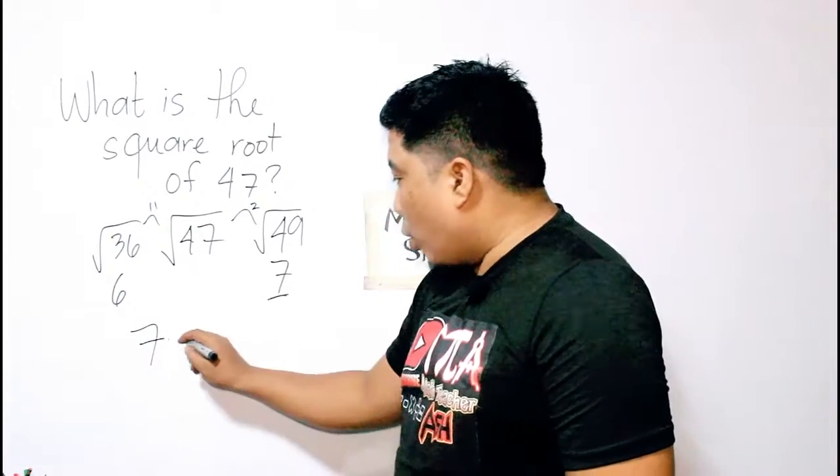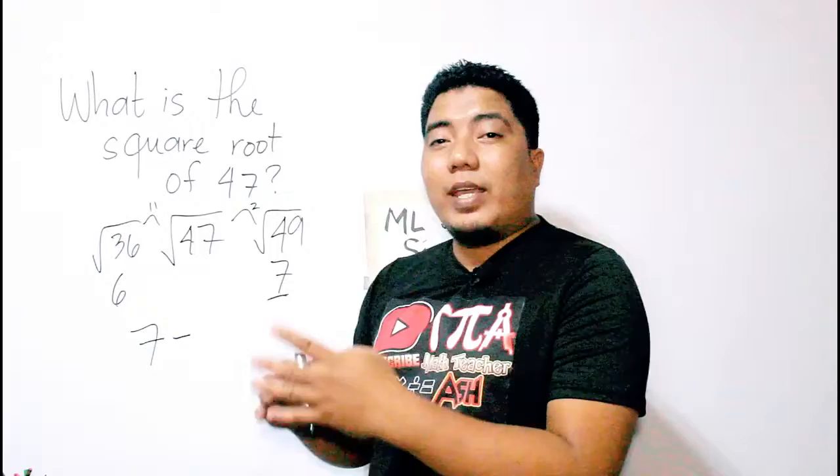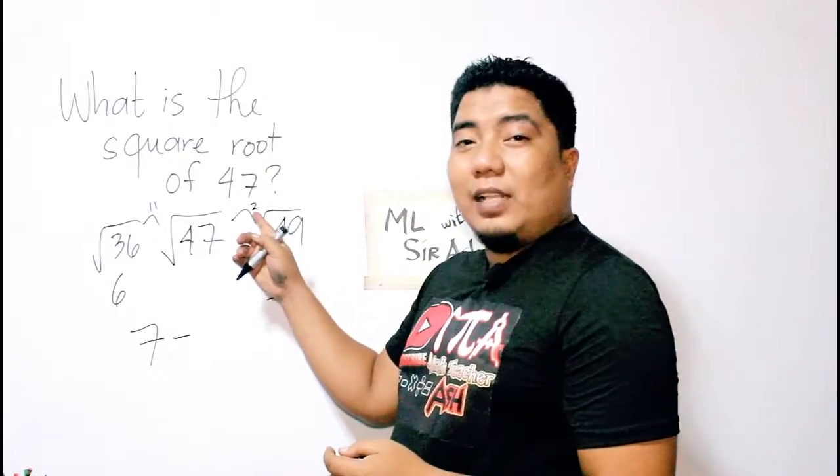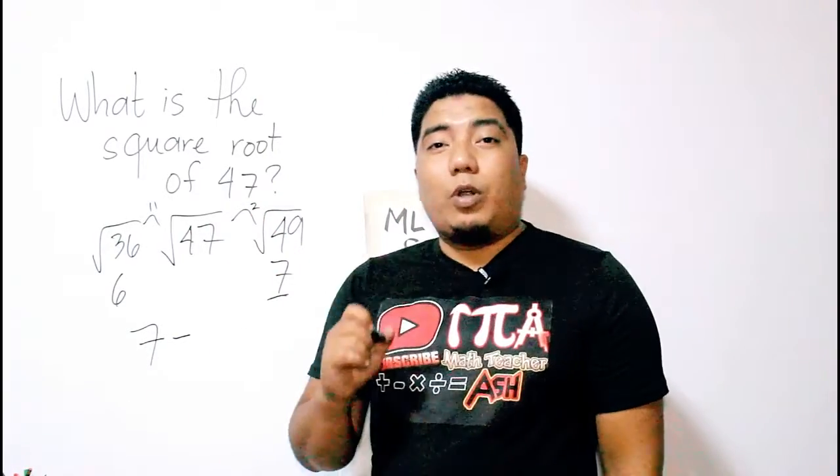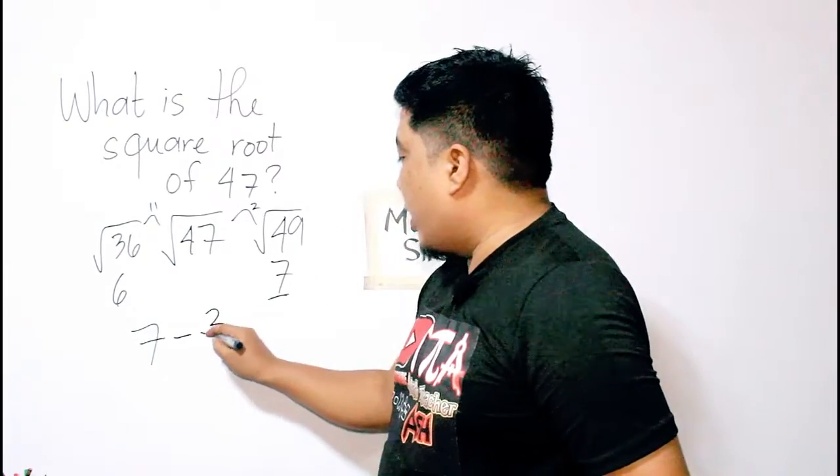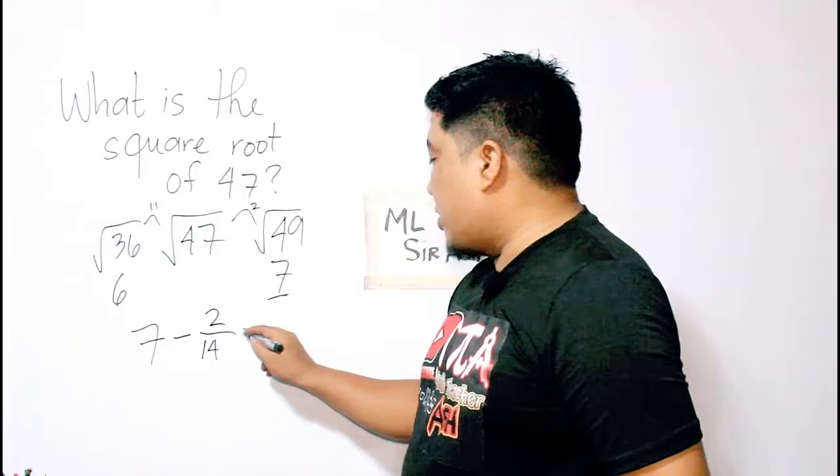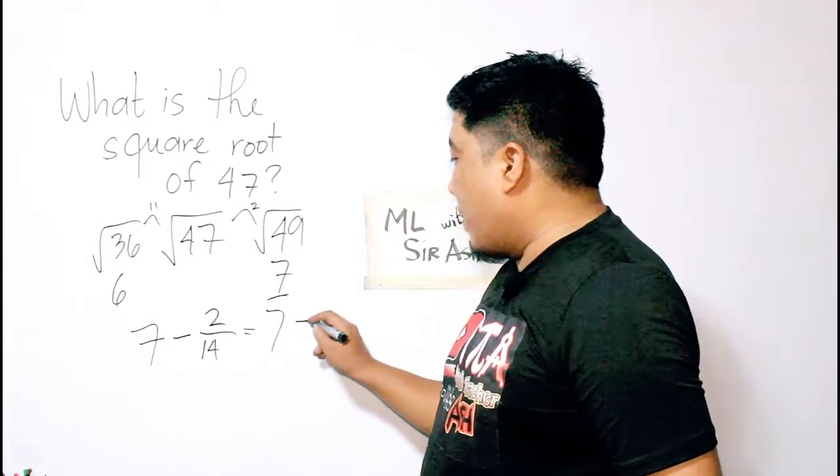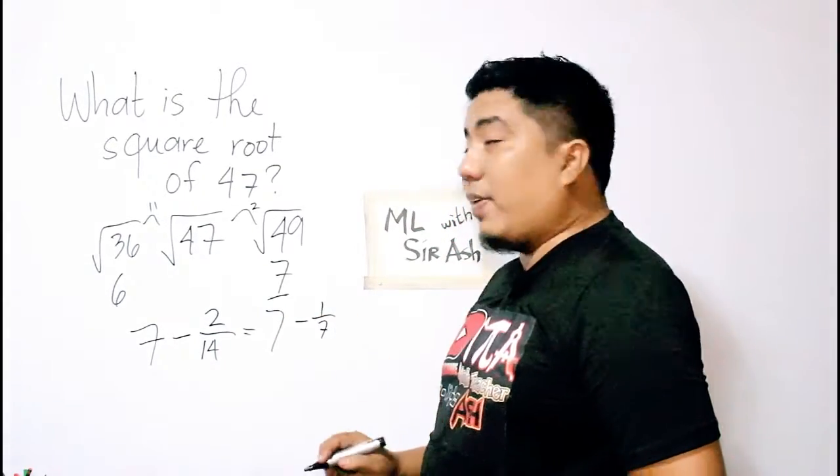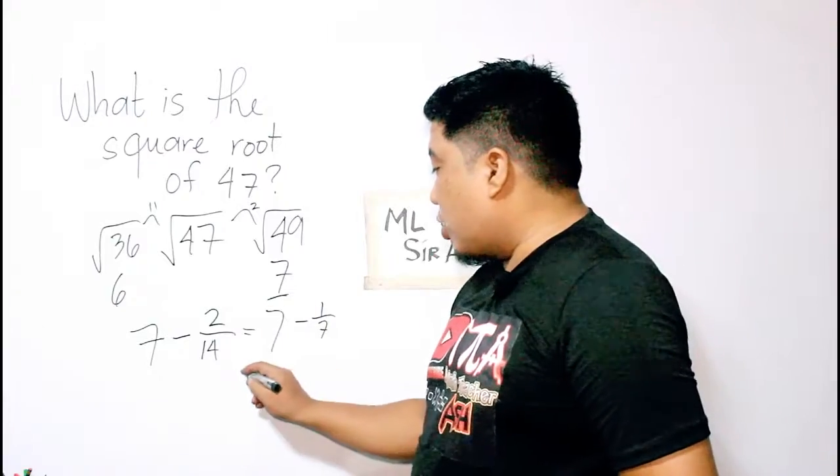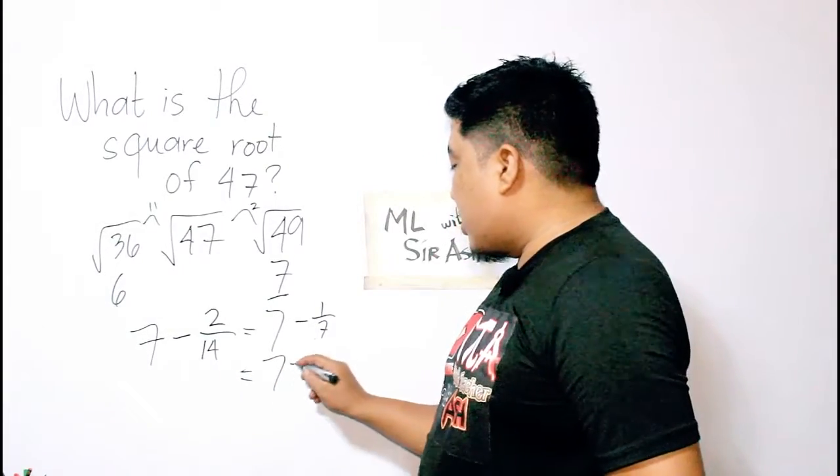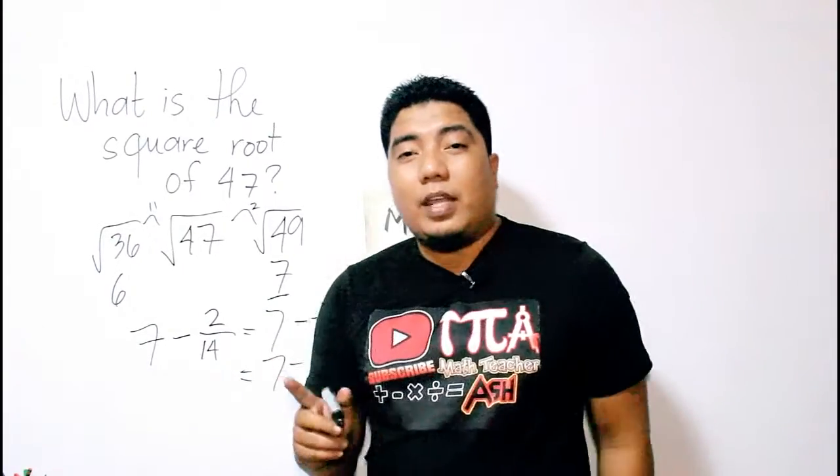So if that's the case, then we will write 7, we subtract 7, we subtract it, and then we get the ratio of the difference and twice our minimum. So that will give us 2 and twice 7 is 14. So if we simplify this, this is 7 minus 1 over 7.